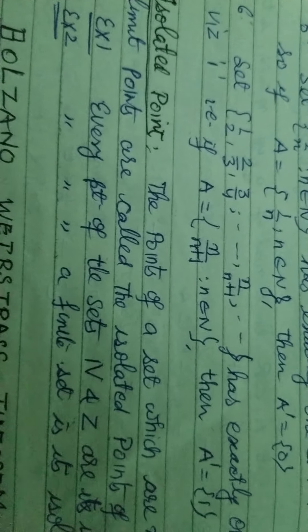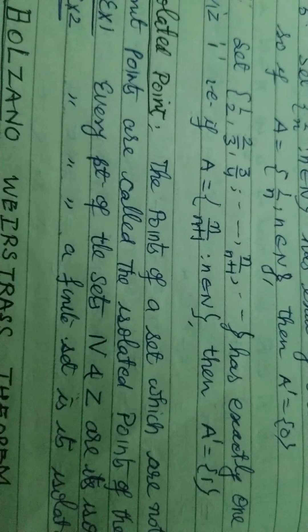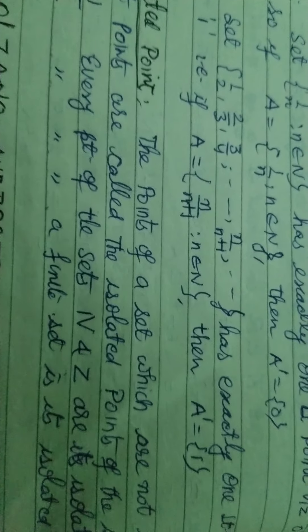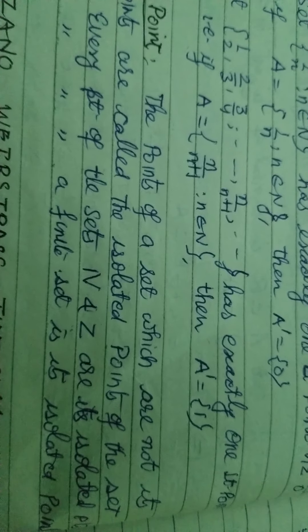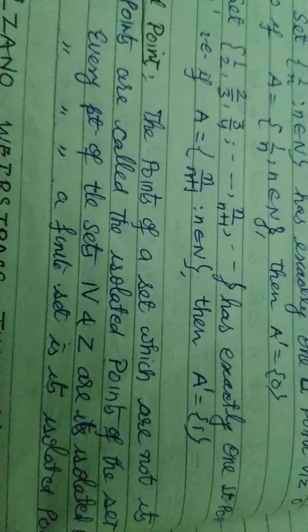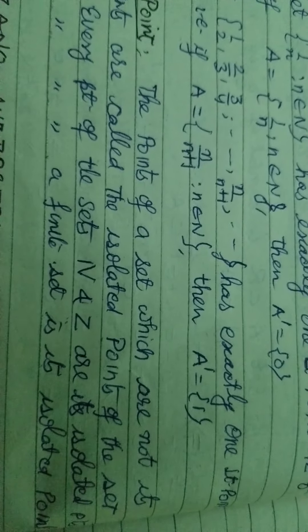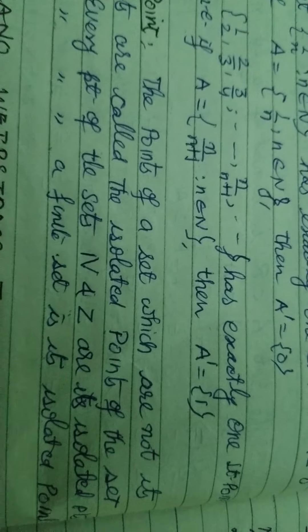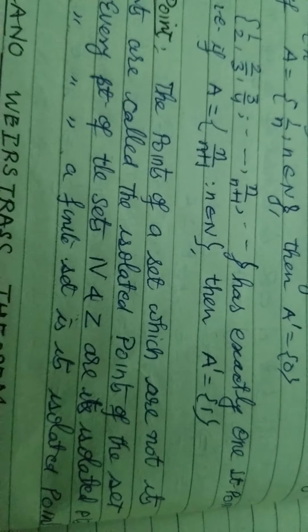Now we come to isolated points. The points of a set which are not limit points are called isolated points of the set. For example, every point of the set N and Z are its isolated points because N and Z have no limit points, so every point is an isolated point. Similarly, every point of a finite set is also an isolated point because a finite set has no limit points.